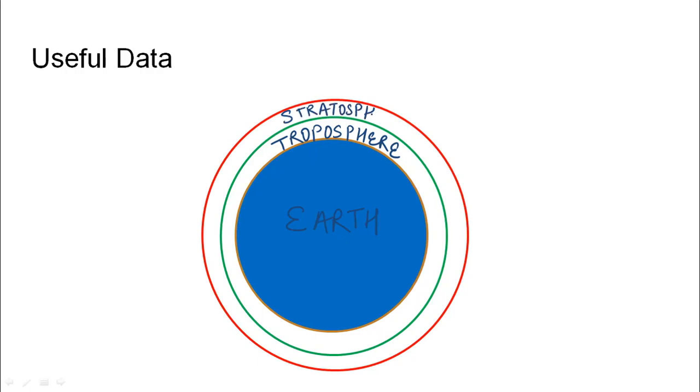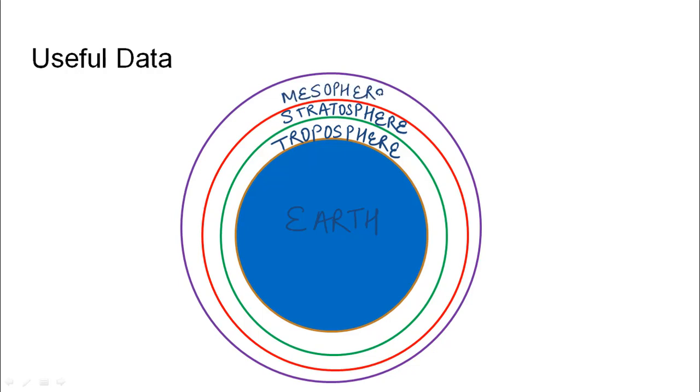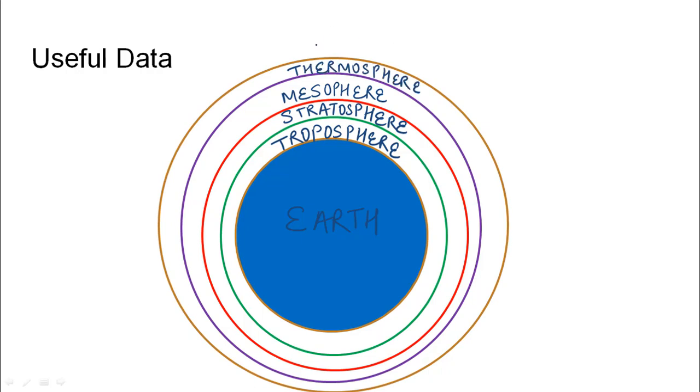This is the layer in which aeroplanes generally fly. Then we have the mesosphere, this is followed by the thermosphere, and ultimately we have the exosphere which is the outermost layer of the atmosphere. So we start with troposphere, then stratosphere, mesosphere, thermosphere, and exosphere.